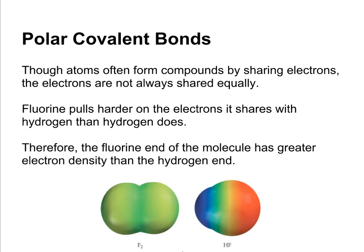So covalent bonds are formed by atoms sharing electrons, but those electrons are not always shared equally. Fluorine is going to pull harder on electrons it shares with hydrogen than hydrogen does. That's going to result in an uneven electron distribution or unequal electron density.